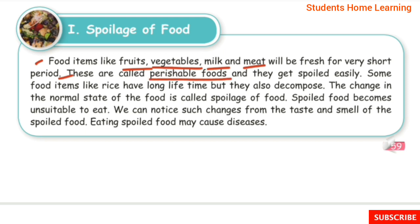Perishable foods get spoiled easily. Some food items like rice have a long lifetime but they also decompose eventually. The change in the normal state of the food is called spoilage of food.